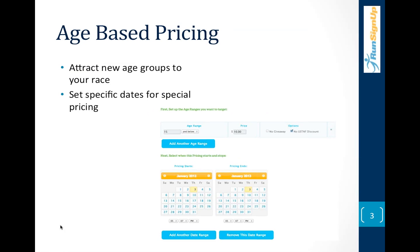You can also set dates for when you want these different pricing specials to be available, which is convenient for targeting early registrants. When promoting to age groups, try to find your local cross-country or track coach at the high school and reach out to them. If there's a Girls on the Run group in your area, let them know about the special pricing for younger people. Make sure you call this out in your regular promotional material, as it might entice a parent to bring along a child.